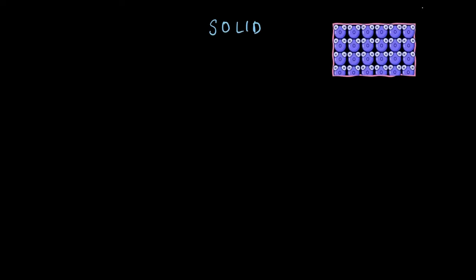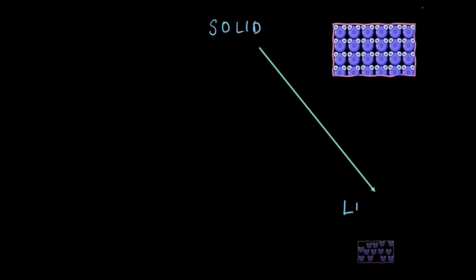All right, that was quite a long discussion. Let's quickly summarize them to make it clear. First, when a solid turns into liquid with the help of heat, this process is called melting, and it occurs at a specific temperature called melting point.